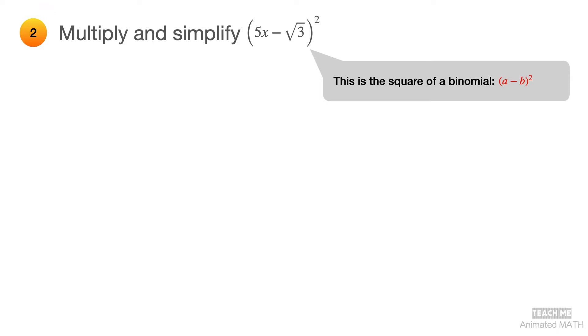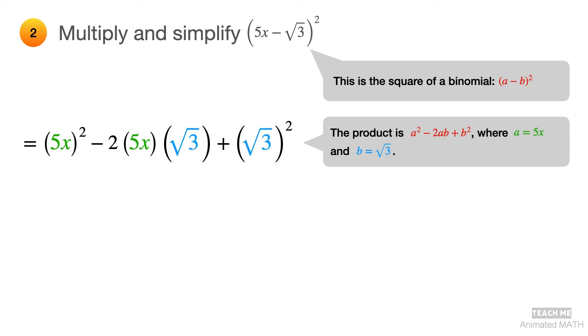This is the square of a binomial which follows the pattern a minus b squared. Its product is a squared minus 2ab plus b squared, but with a equal to 5x, and b equal to square root of 3. Simplify to get the final answer, which is 25x squared minus 10 square root of 3x plus 3.